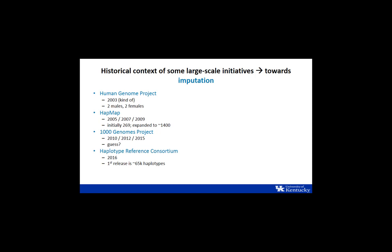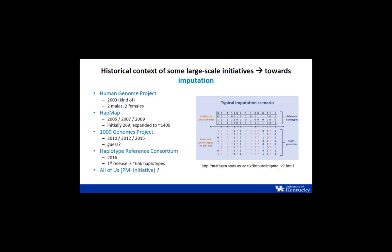The Thousand Genomes Project extended the HapMap to get more resolution from the number of markers and variants, and more people from more diverse populations. The Haplotype Reference Consortium is kind of the next stage — the first release is about 65,000 haplotypes. The All of Us Precision Medicine Initiative is shooting to get a million folks to get whole genome data. In the tutorial, we already have either previously imputed or non-imputed data.